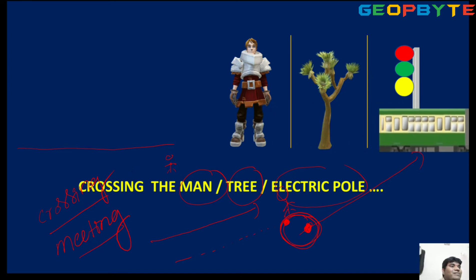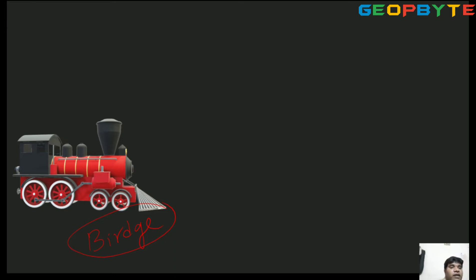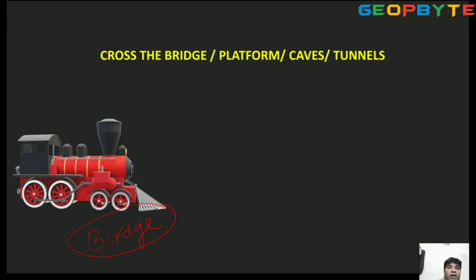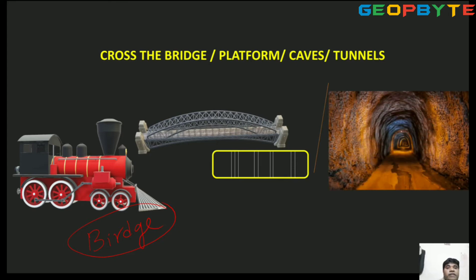The second concept: crossing a countable object. Countable objects means bridge, platform, caves, tunnels — these types of objects are called countable objects. So crossing the bridge, crossing the platform, caves, tunnels — observe.